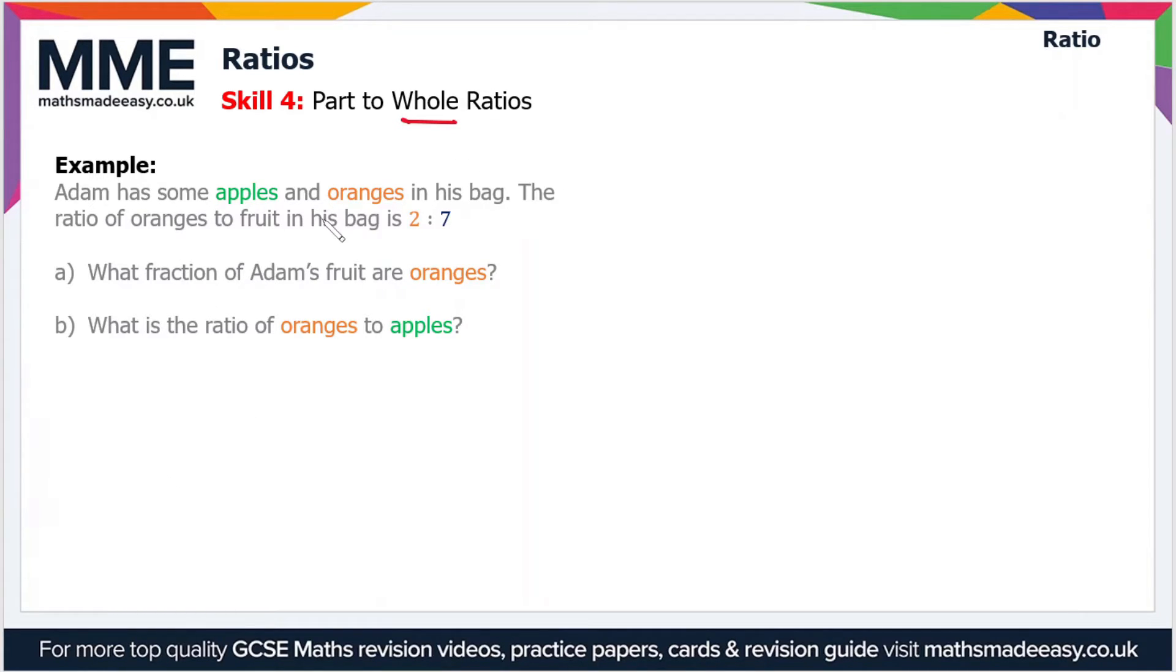So in this example, Adam has some apples and oranges in his bag. The ratio of oranges to fruit in his bag is 2 to 7. In this example, oranges is a part and fruit represents the whole.